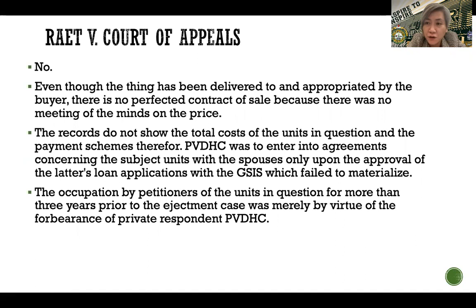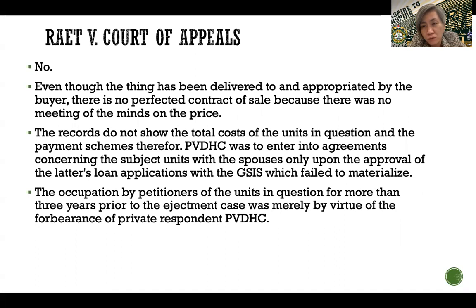The court ruled that the spouses Riot are not correct. Even though there was delivery and appropriation by the buyer, there is no perfected contract of sale because there was no meeting of the minds on the price. The records do not show the total cost of the units in question and the payment schemes therefore. The developer was to enter into agreements with the spouses only upon approval of the loan. Since the loan did not materialize, there was no instance at all where the developer could have entered into an agreement with the spouses Riot. The occupation by the petitioners of the units for more than three years prior to the ejectment case was merely by virtue of the forbearance of the private respondent, the developer.